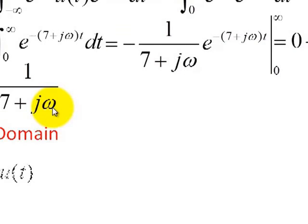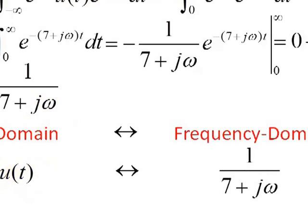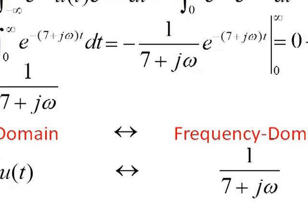So what we have in the time domain is the exponential e to the minus 7t times u of t, and its corresponding frequency domain description, obtained by applying the definition of the Fourier transform, is 1 over 7 plus j omega. And that's how we get the Fourier transform of an exponential. Signing off is Dr. J.